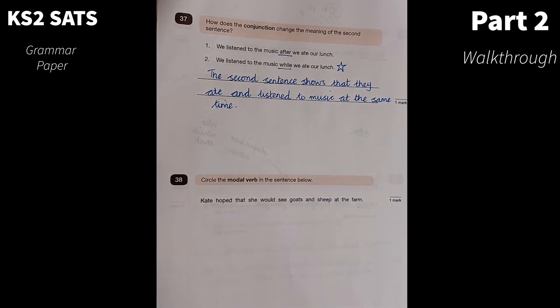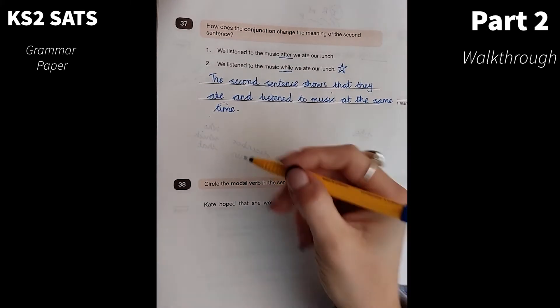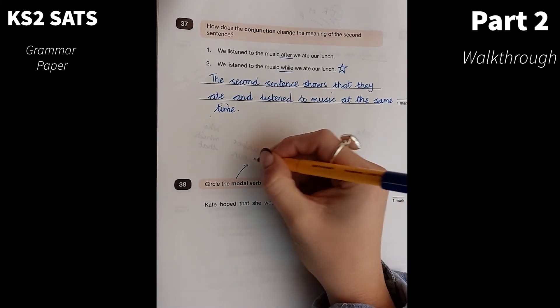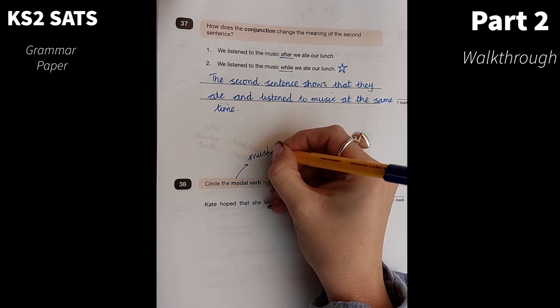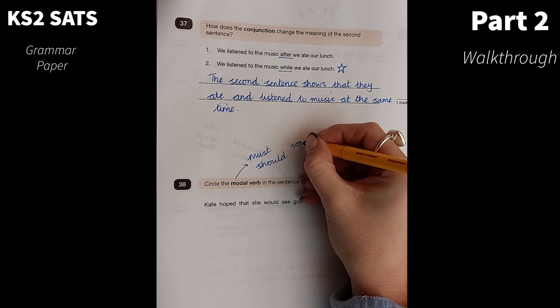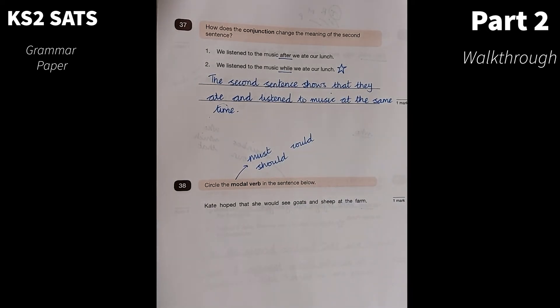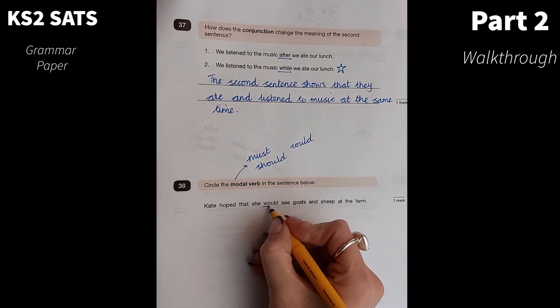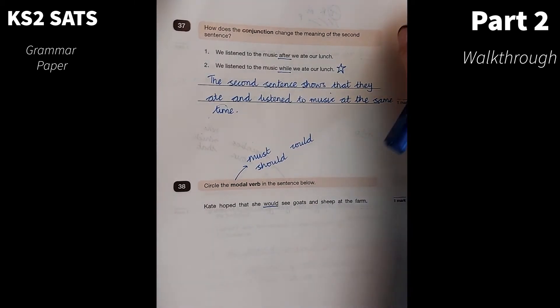Number 38. Circle the modal verb in the sentence below. Modal verbs, we have things like must, should, could, would. Let's see if we can find those in the sentence there. Kate hoped that she would see the goats and sheep at the farm. Would is our modal verb there.